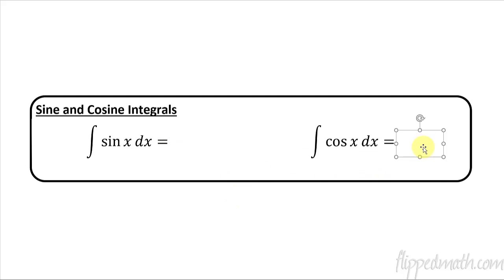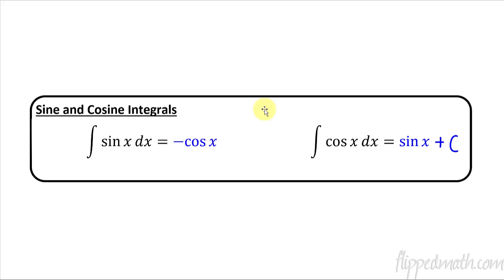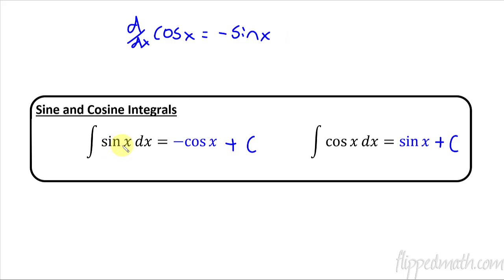Let's start with the easier one: what's the anti-derivative of cosine of x? What do I take the derivative of to get cosine? That's just sine — so the anti-derivative of cosine(x) is sine(x) + C, because the derivative of sine is cosine. Now for the anti-derivative of sine(x), it's a little different — it would be negative cosine(x) + C. Why negative? Because the derivative of cosine x equals negative sine x. So if I take the integral of positive sine x, it has to be negative cosine x, because taking the derivative of negative cosine x gives positive sine x. I find it easiest for most students to keep the memorization of the derivative and work backwards to make sure it works — and you can always take the derivative when you're done just to check.